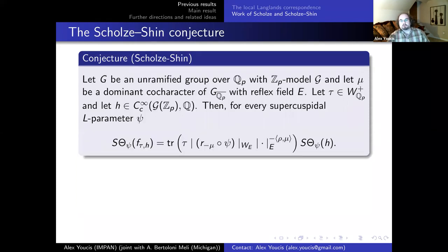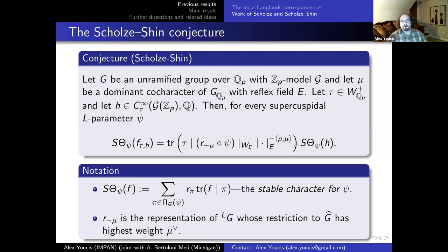Once you have these generalizations of the F_{τ,H}'s, you can ask whether a trace-like identity holds in these generalized situations. The conjecture of Scholze and Shin in their JAMS paper says: for an arbitrary unramified group G, for every τ, H, and μ, you get a function F_{τ,H,μ} such that an equality roughly like Scholze's trace equation holds, with two important differences. First, on the left side we sum over the entire packet for ψ (not a single π). Second, since ψ is a parameter for G, we take a trace after composing with the representation r_{-μ} — the representation of the L-group whose restriction to G-hat has highest weight μ-check.